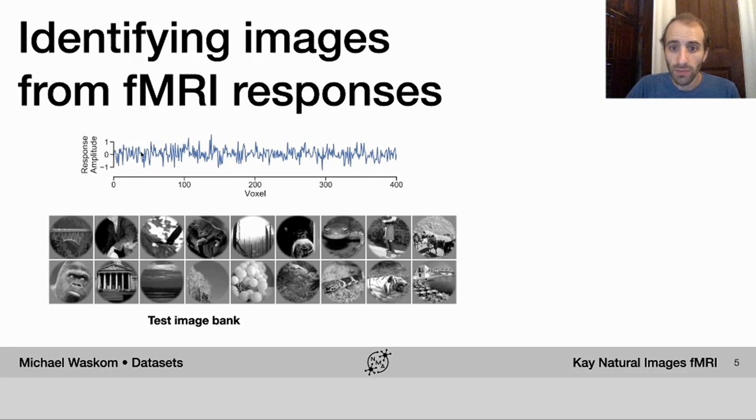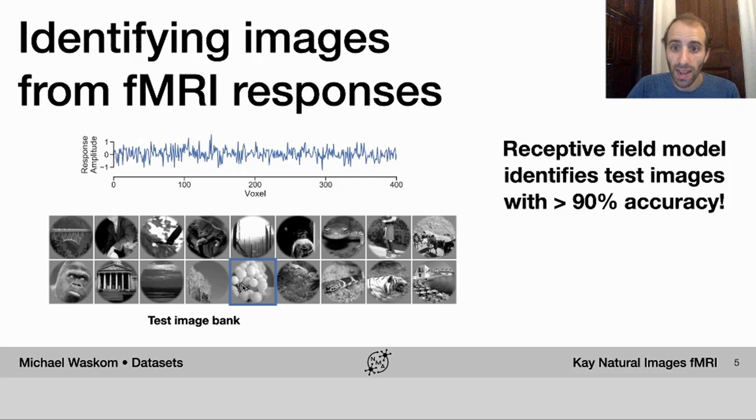So given some pattern of brain activity, is it possible to say this is the image from this set that the subject is looking at? Turns out that it is. In the original paper, it was reported that over 90% of images could be identified accurately using this simple receptive field model that I just told you about.